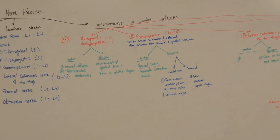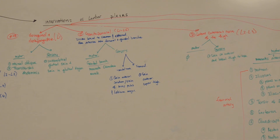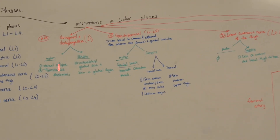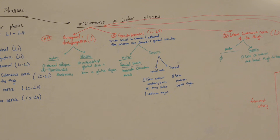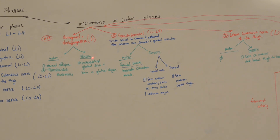Innervations of the lumbar plexus. The ilioinguinal nerve and the iliohypogastric nerve arise from L1. For motor innervations, they do not innervate any of the lower limb muscles, but they do innervate the internal oblique and transversus abdominis. For sensory innervation, they innervate the posterolateral gluteal skin and the skin of the gluteal regions.